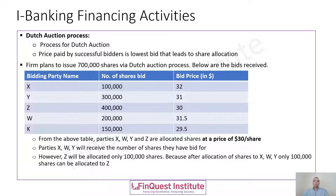Let's try to understand this through a simple example. A certain firm plans to issue 700,000 shares and they wish to use the Dutch auction process. Imagine five counterparties who are bidding — these are the parties interested in purchasing these shares.